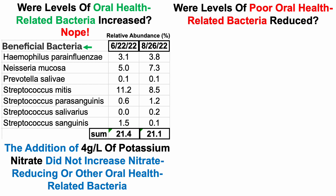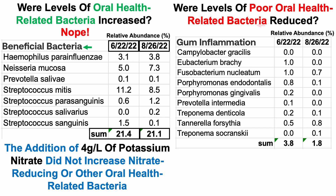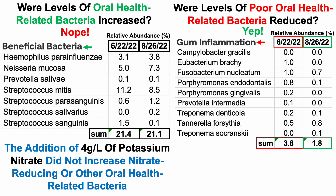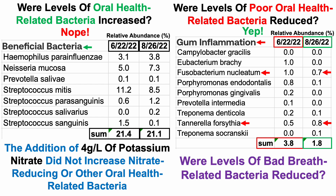What about bacteria linked with poor oral health — were they reduced? Starting with bacteria related to gum inflammation: test one had 3.8%, and test two showed some improvement at 1.8%. The majority of that 1.8% comes from two bacteria: Fusobacterium nucleatum and Tannerella forsythia, together accounting for 1.5%. If I can reduce those two, I could potentially bring gum inflammation-related bacteria down from 1.8% toward around 0.3%.